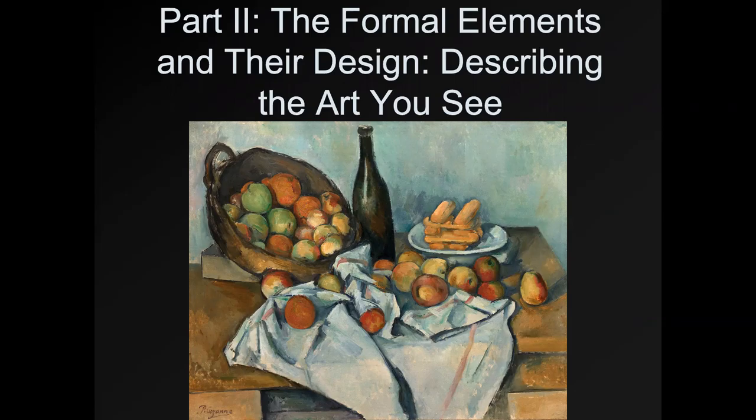Welcome to a new section in our lectures, part two. Part one was more about general ideas about how artists perceive the world and how they relate to their audiences. This part is going to be more technical — the formal elements and their design, describing the art you see. Form includes lines, colors, and composition — basically what you see in the artwork. We'll talk about how artists use formal elements and what they can mean in different cultures.